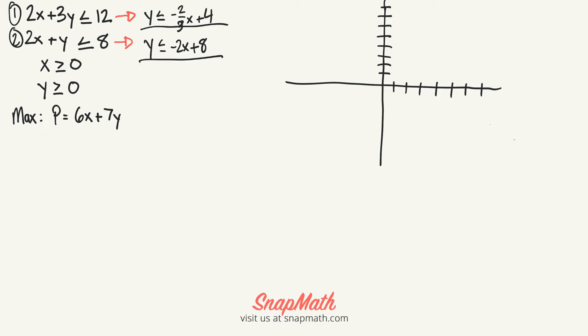The first one starts at positive 4 and goes down 2 over 3, so this is my first line. I'll do the shading after I'm done with all the lines.